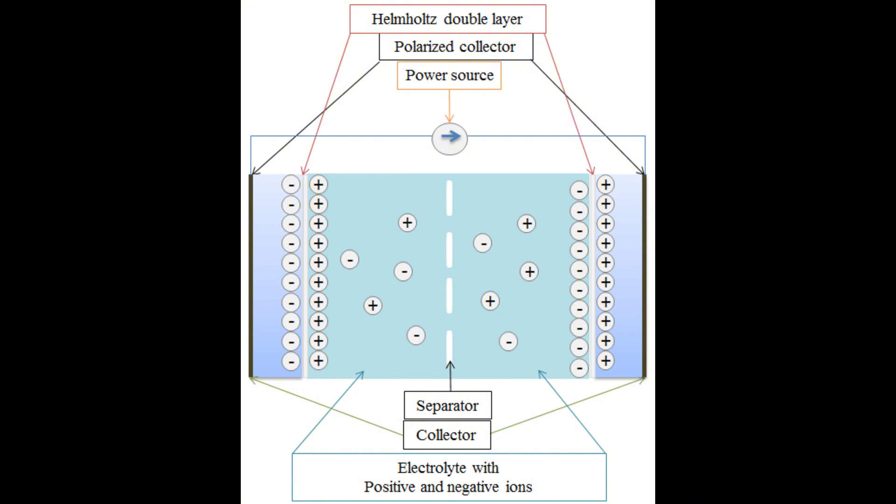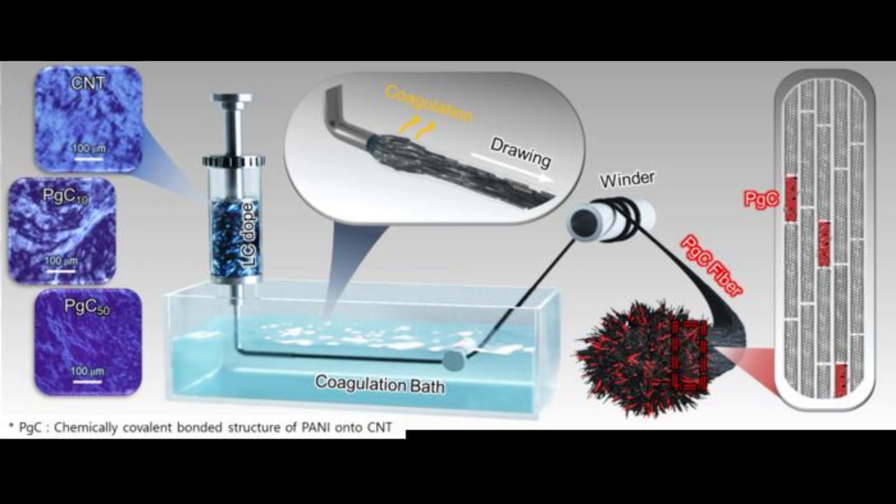Traditional supercapacitors store energy by separating ions across two plates immersed in an electrolyte, which allows for incredibly fast charge and discharge rates. But without any chemical reactions, their ability to hold energy has always been limited. By integrating the conductive polymer into a carbon nanotube framework, the researchers have managed to increase the storage capacity while preserving the supercapacitor's ultra-fast performance and resilience.